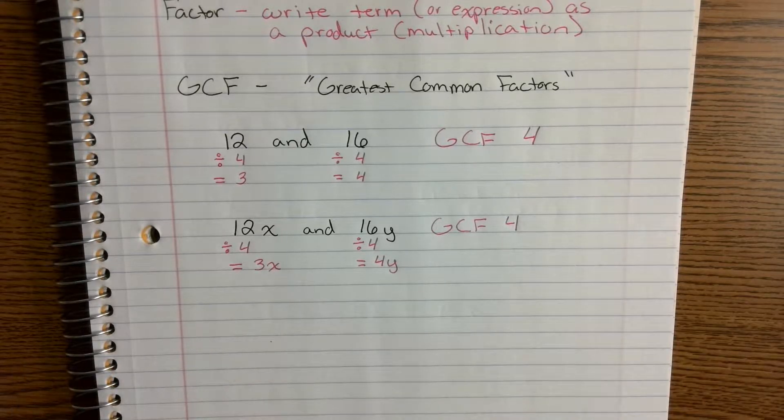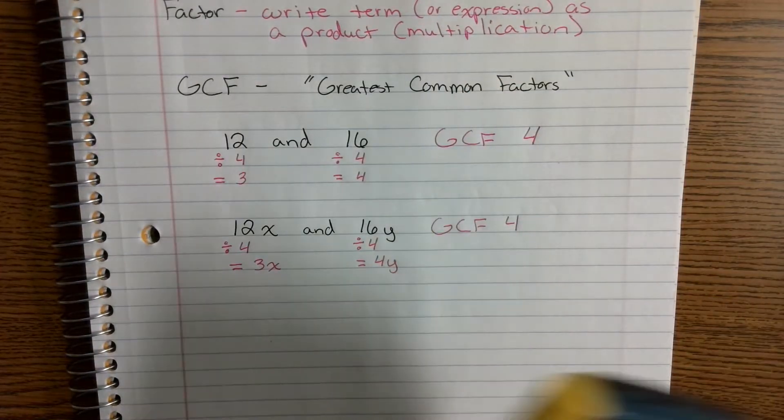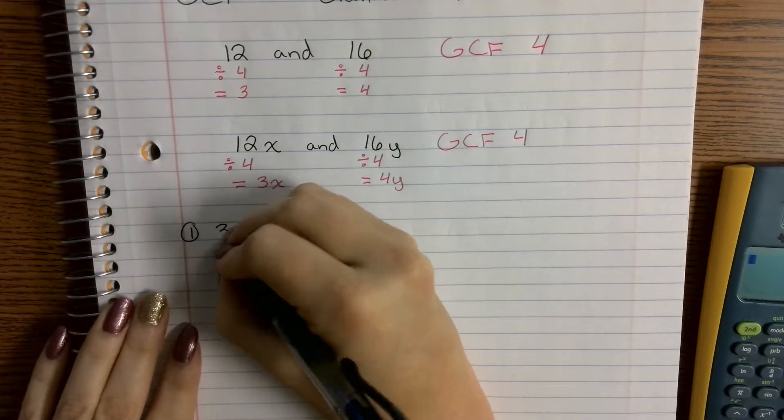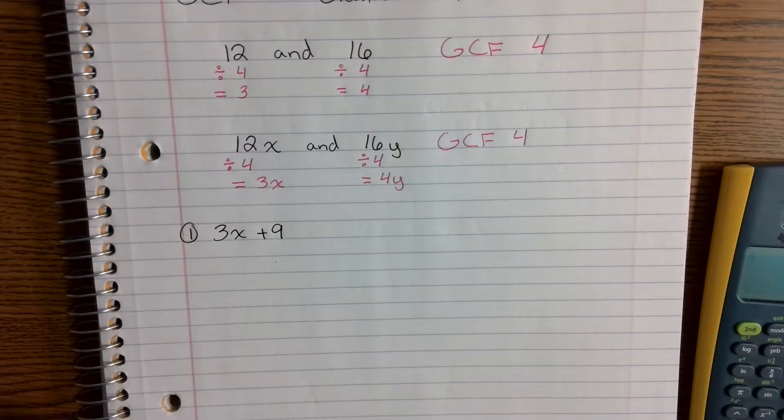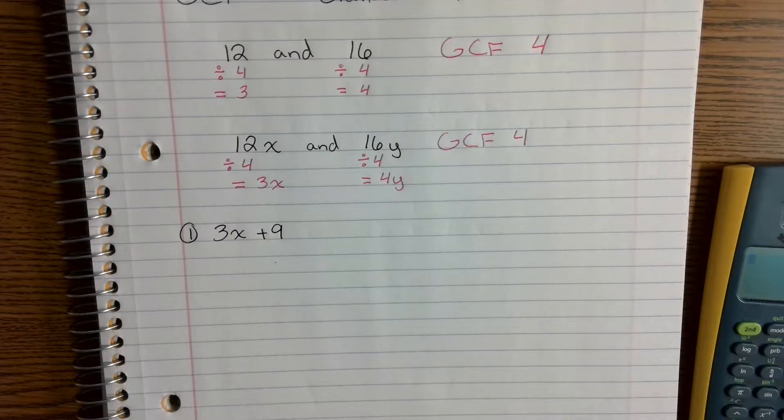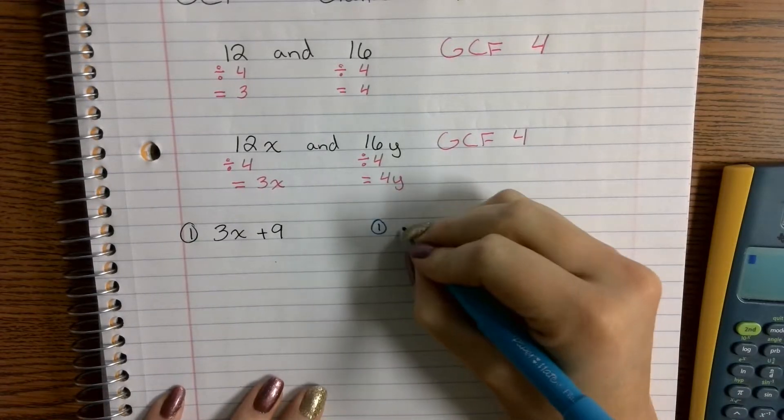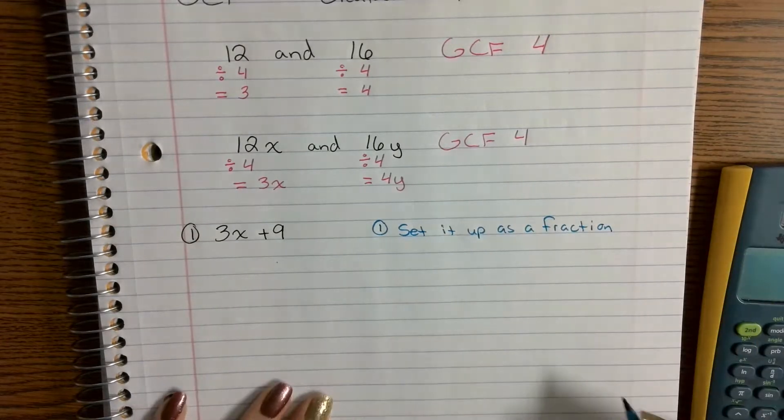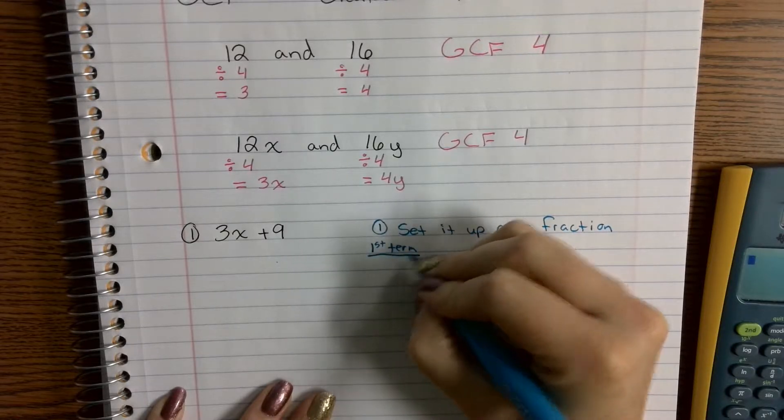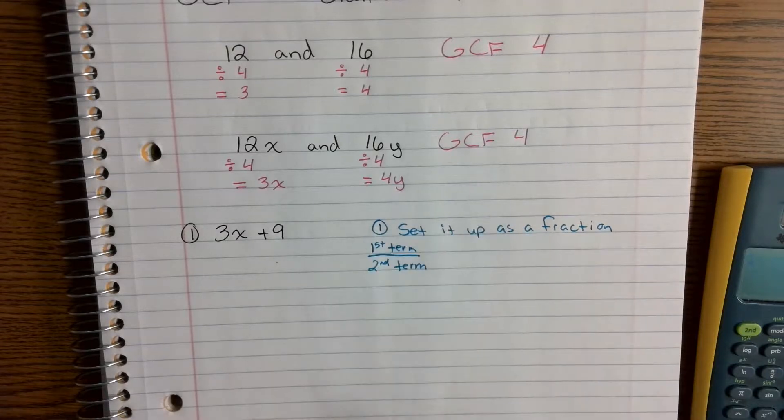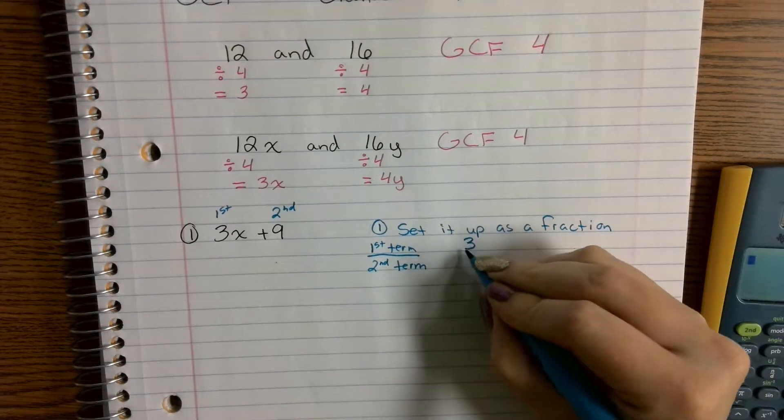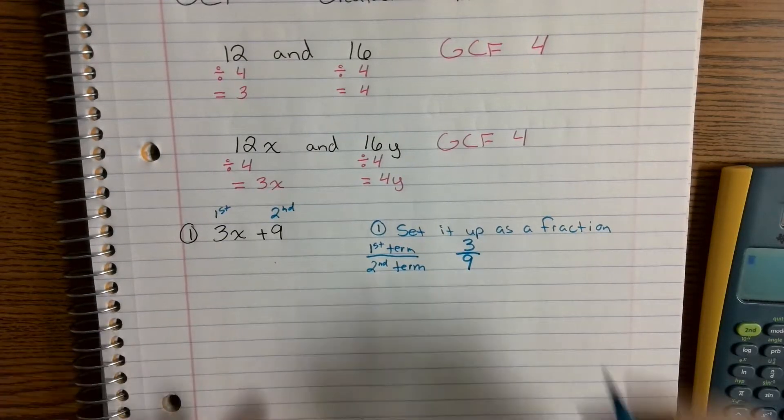So you need to make sure you've got your calculators out. So you need the calculators because you're going to be using the fraction button. I'm going to show you guys a quick trick that will help you with this process. So if we take a look at a problem. Let's say that I have the following expression. I've got 3X plus 9 and I want to go ahead and factor it. My very first step is to set it up as a fraction where it's going to be the first term over the second term.